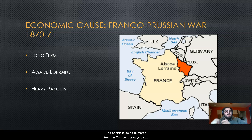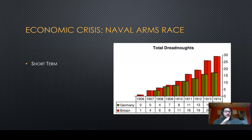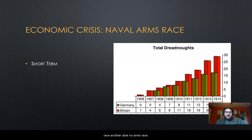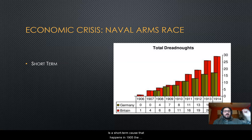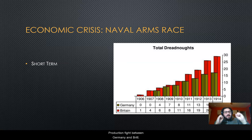This is going to start a trend in France to always be against Germany, no matter the situation — leaving a lasting feeling that they must make up for the humiliation and economic loss. Next, we're going to talk about the Naval Arms Race, which is a short-term cause that begins in 1905 — a production fight between Germany and Britain.